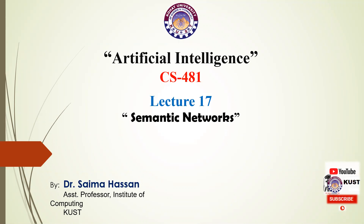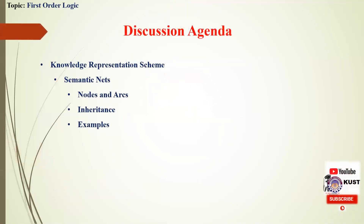In order to solve various problems and to draw some conclusions, we often have information already stored in our brain that we can utilize. But how is that information stored in our brain? There are a lot of possibilities. Today we are focusing on one of them which is the semantic network. We'll see what is the meaning of semantic network and we'll also talk about nodes and arcs in semantic network with examples.